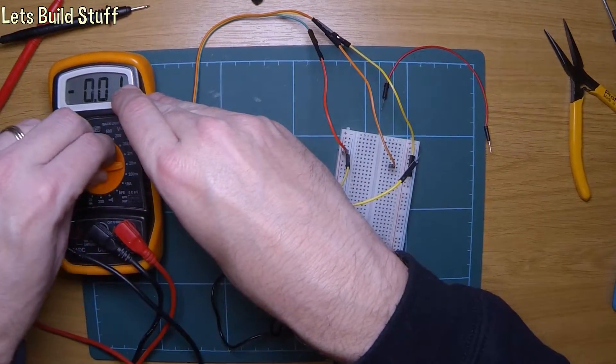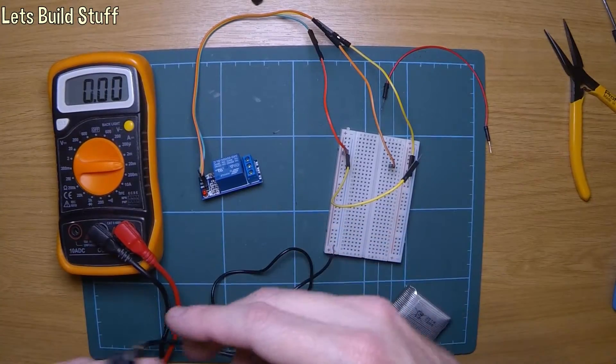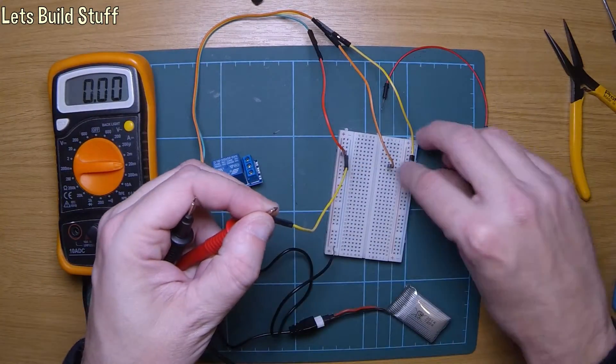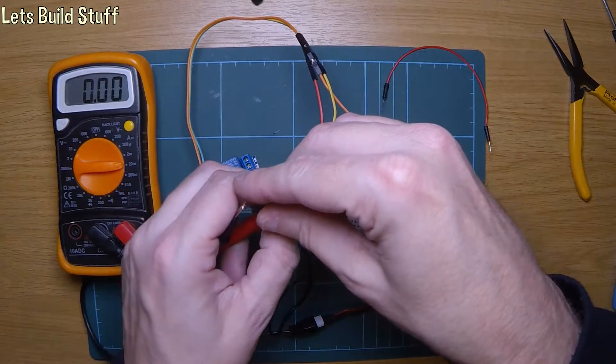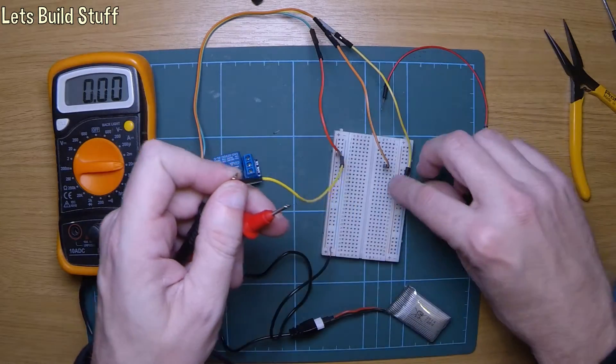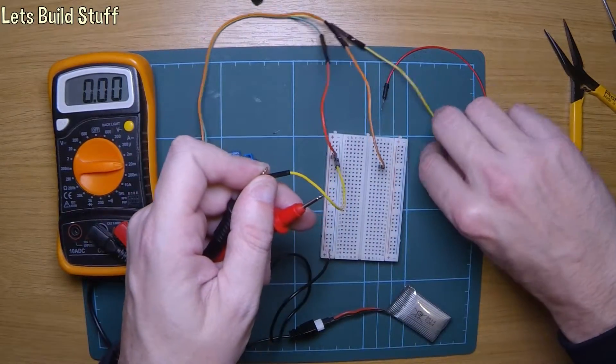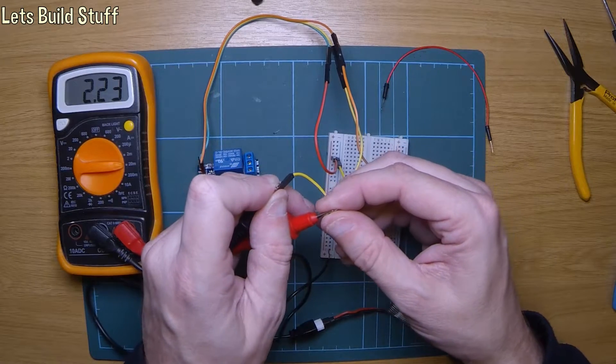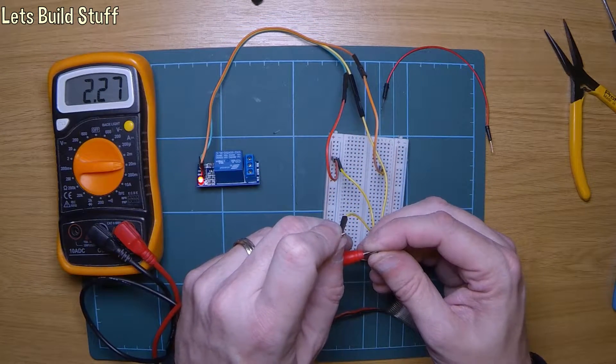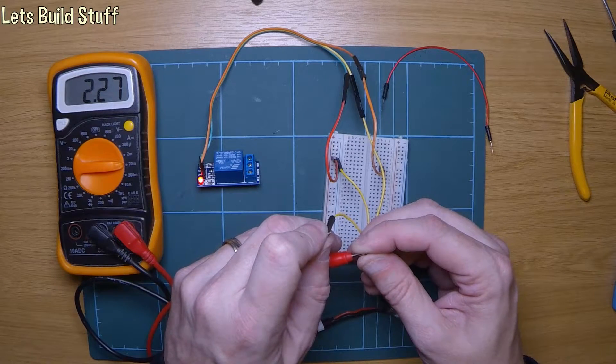So what I'll do is I'll put this on to milliamps. Obviously it will be minus, positive. Let's see what it says. That's negative, so let's turn it round. I wasn't even paying attention to which way around it was. Doesn't hurt. That. So what's that. That's 2.2 milliamps.